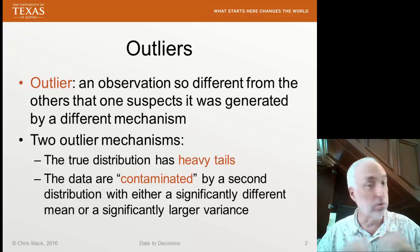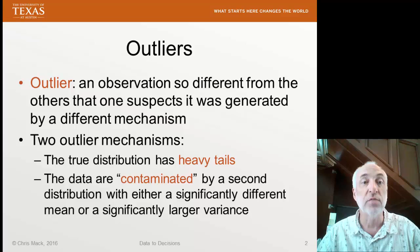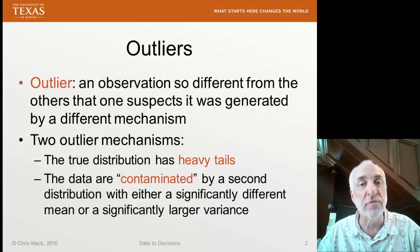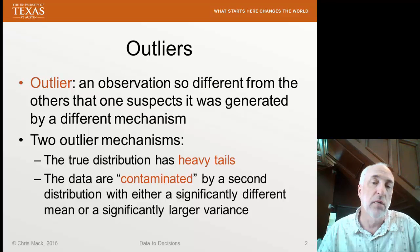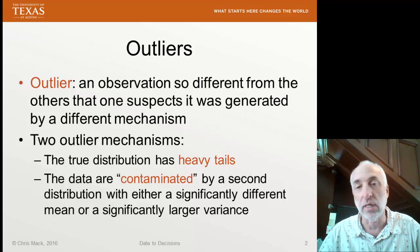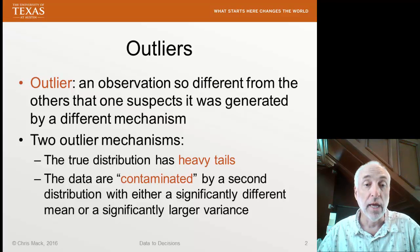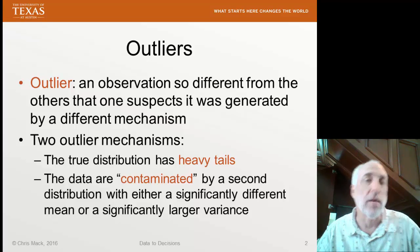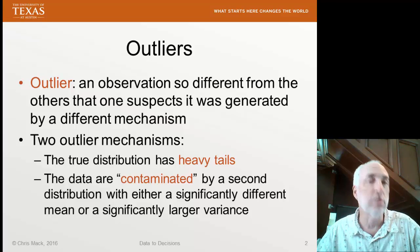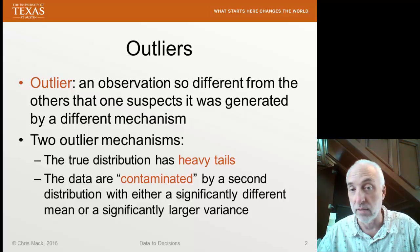One is where the true distribution of our data has very heavy tails. This means that we get some extreme points more frequently than we expect, because maybe we're expecting a distribution with lighter tails, like a normal distribution, and instead we get a distribution with heavy tails, like a Cauchy distribution. In that case, it's not that the outlier mechanism is an error or some problem — it's just that we weren't expecting a mechanism that produced such heavy tails.